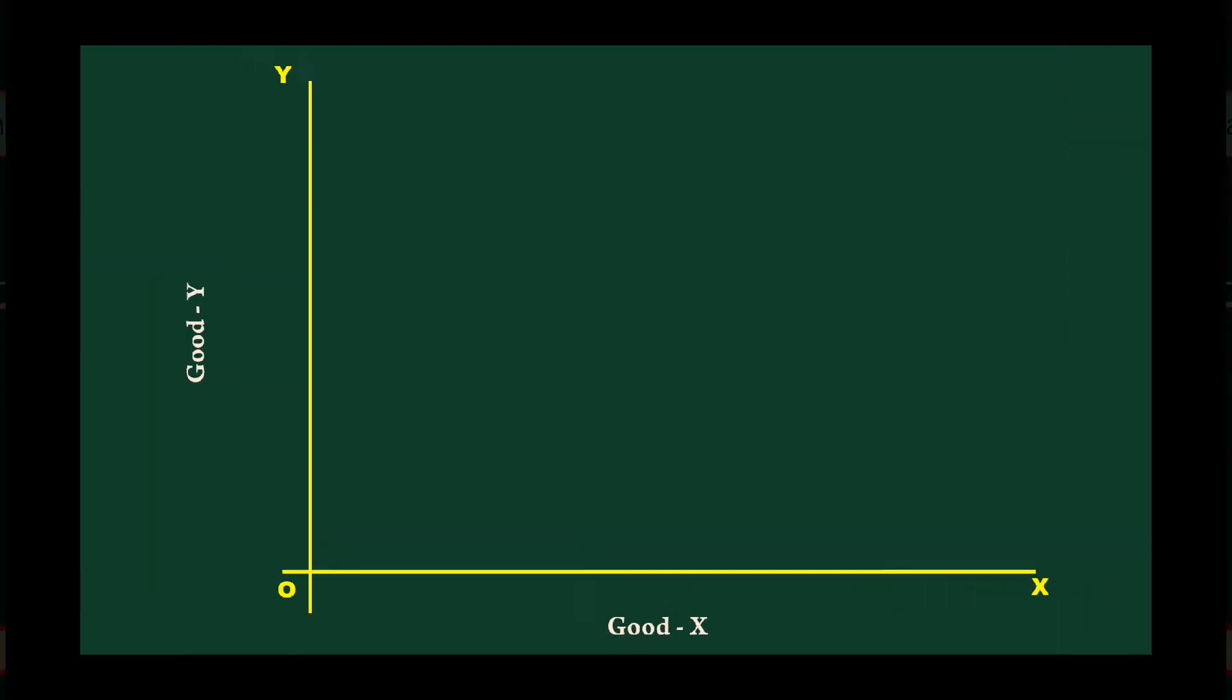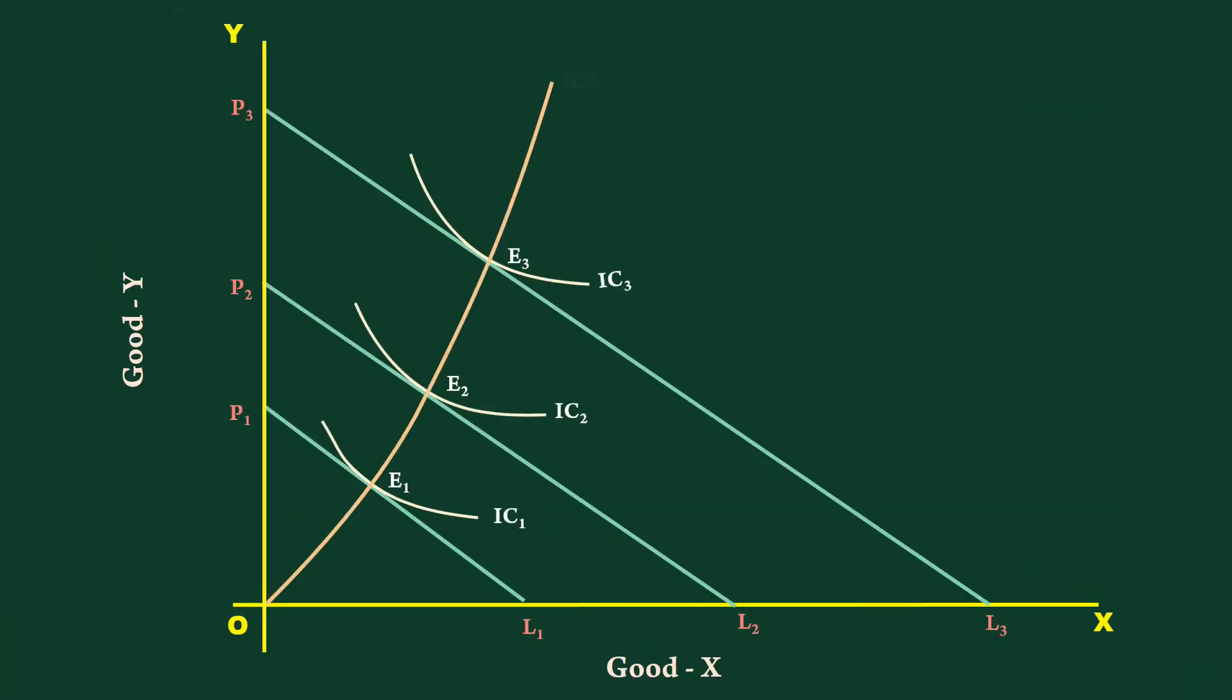Again, given the indifference map and a set of price lines, there will be only one income consumption curve.